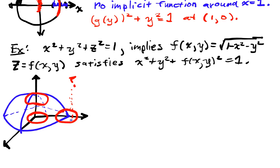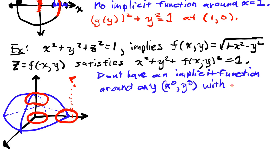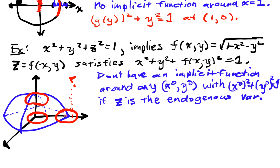So I don't have an implicit function around any x naught, y naught with x naught squared plus y naught squared equals 1 if z is the endogenous variable. It just doesn't happen because I can't get the values for all the points around this point.